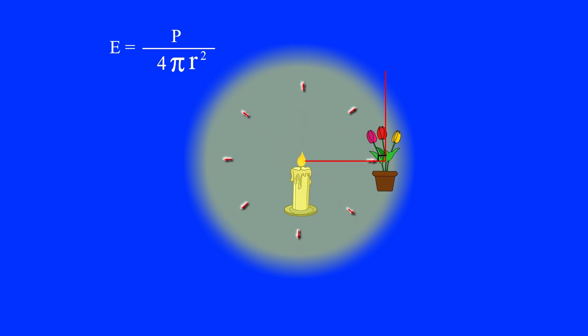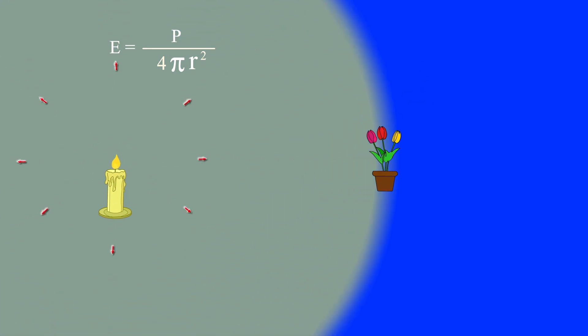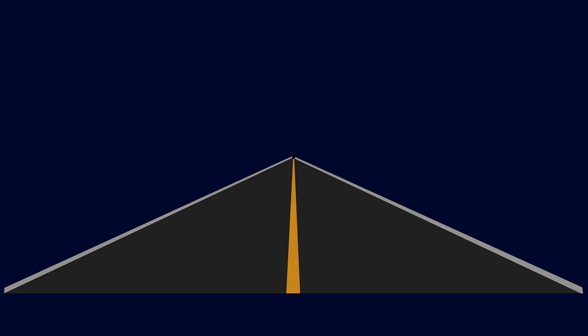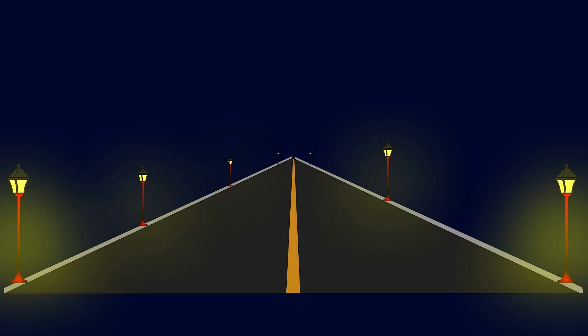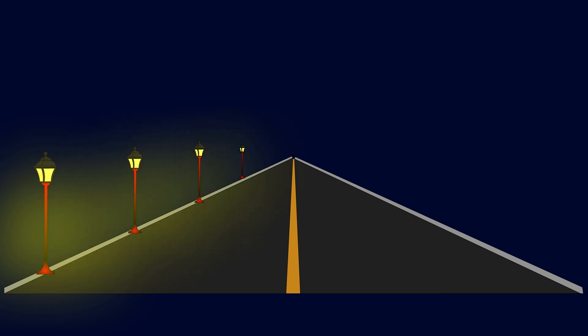The light source must be small or far enough away to be considered a point source. However, the equation does not give accurate values for illumination resulting from long fluorescent lamps or lamps near the surfaces they illuminate. To obtain an area with equal lighting and avoid dark areas, the appropriate design is to distribute the light sources over the area so that the distances between the light sources are equal.